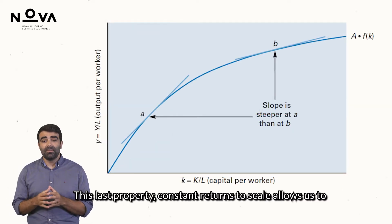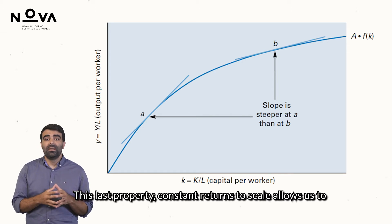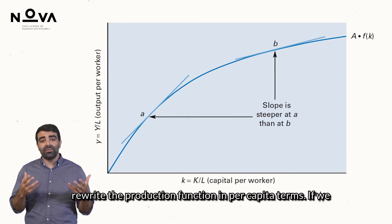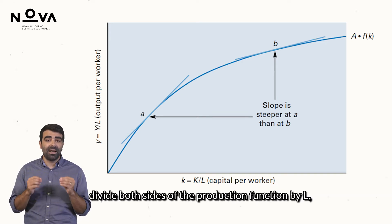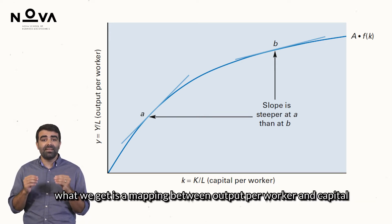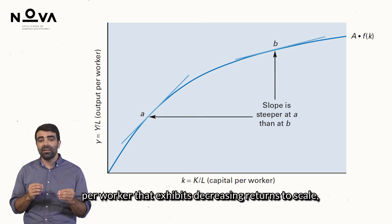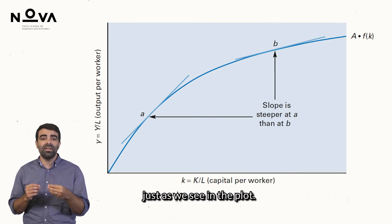This last property, constant returns to scale, allows us to rewrite the production function in per capita terms. If we divide both sides of the production function by L, what we get is a mapping between output per worker and capital per worker that exhibits decreasing returns to scale, just as we see in the plot.